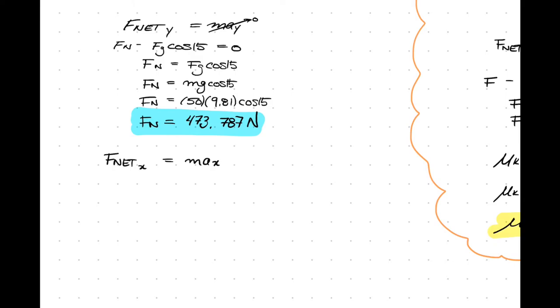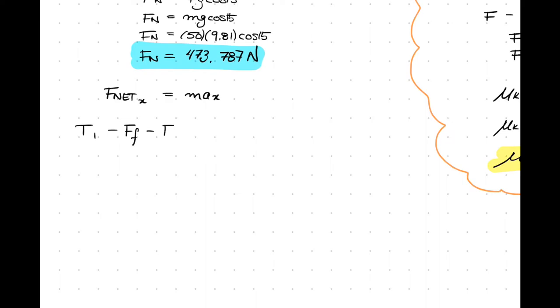Now, interesting to note that Fn here is actually a lower value than it was previously on our side problem. Why is that the case? Well, we have less of the force of gravity pulling in that y-direction, so Fn won't have to be as big.